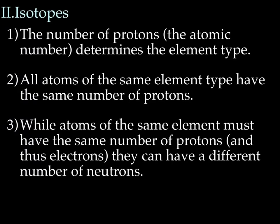Alright, on to isotopes. The number of protons, which is the atomic number, determines the element type. So all atoms of the same element type have the same number of protons. We discussed this in the last lecture. Every single carbon you meet is going to have 6 protons. Every single sodium you meet is going to have 11. Every neon you meet is going to have 10 protons. So it's actually the number of protons that determines the type of atom it is.